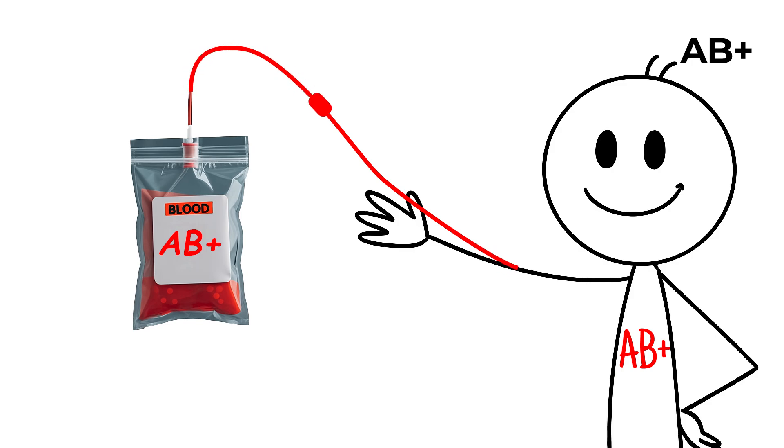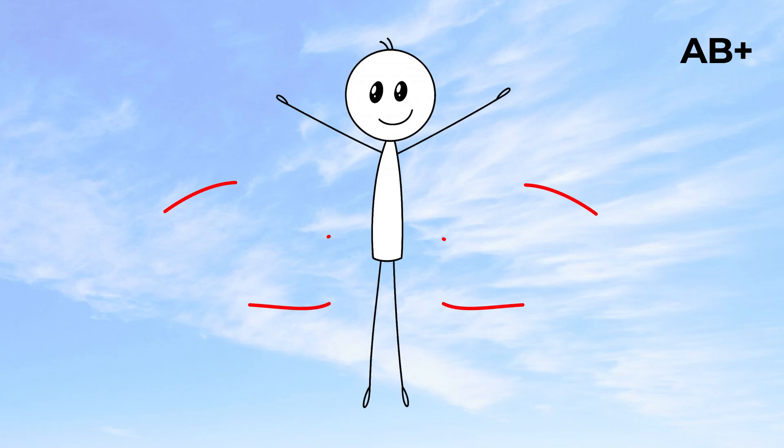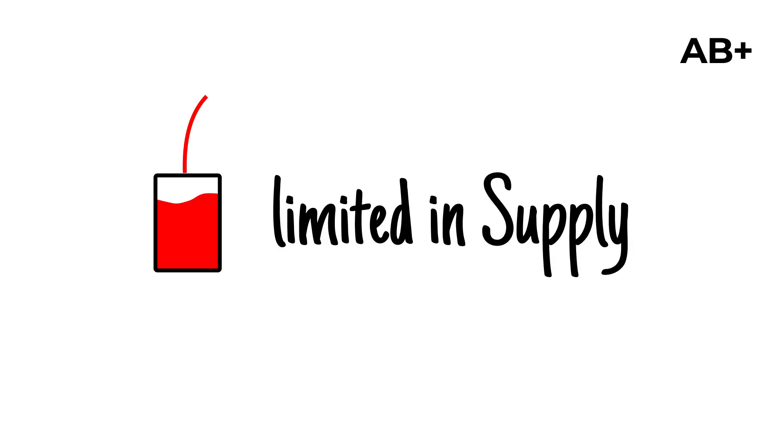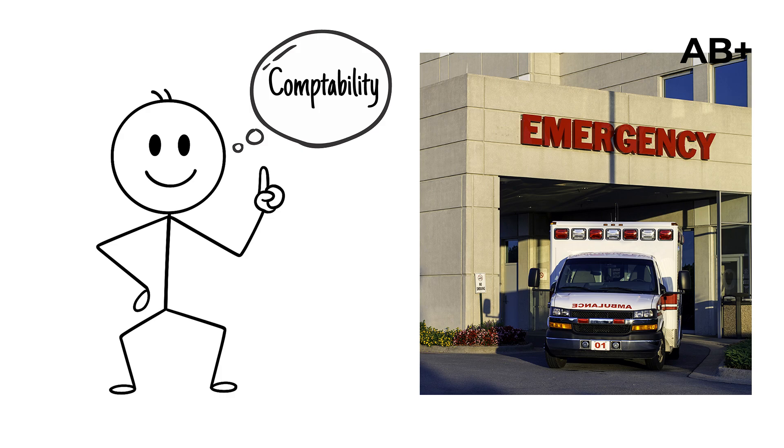They can receive from A, B, AB or O, whether the donor is positive or negative. This makes AB positive the universal recipient in transfusion medicine, a unique advantage when blood supplies are limited or emergencies demand quick compatibility.